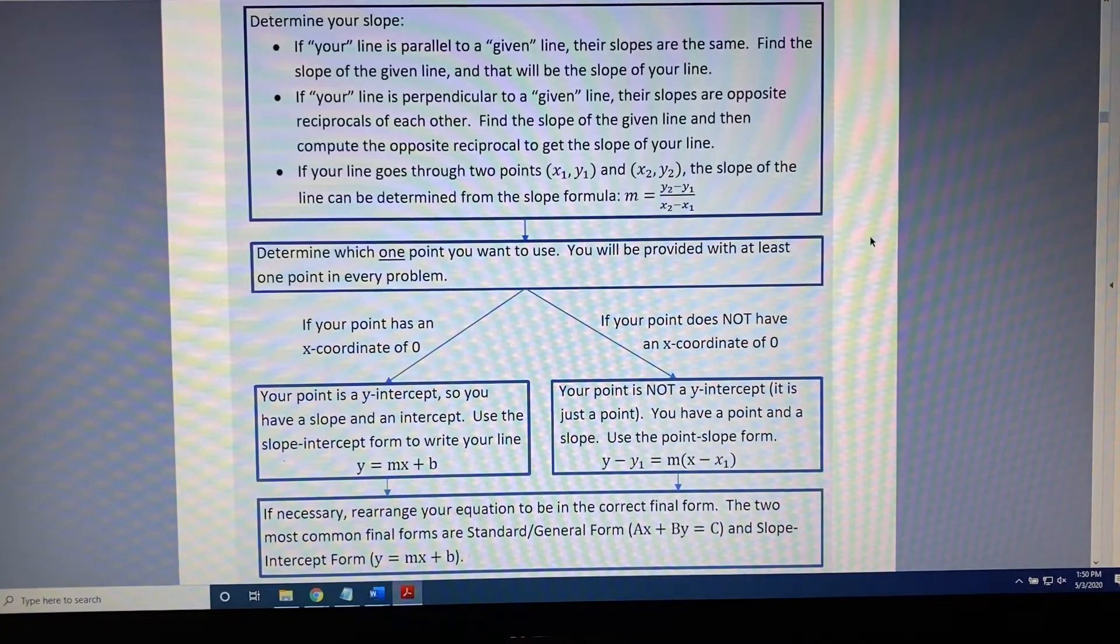Of course, there is a hidden fourth possibility, which is that the slope is simply provided for you in the instructions of the problem. So, we've got our slope. Now we follow the arrow to the next box.